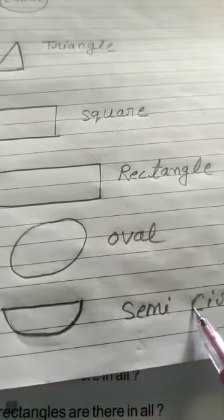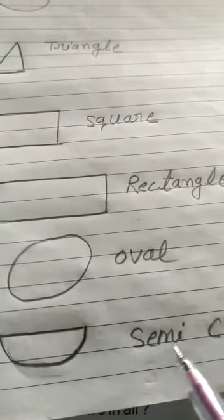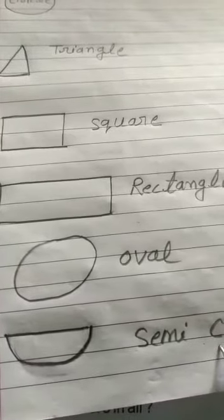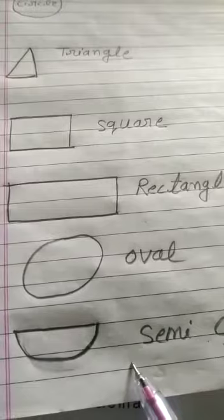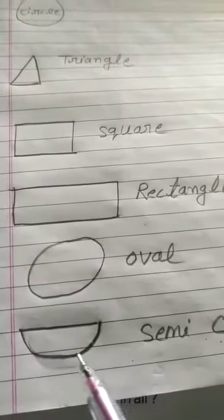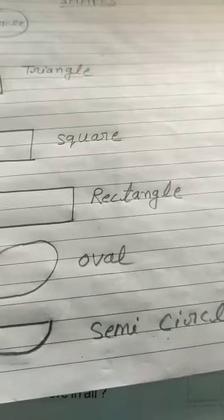Students, what is semicircle? When you cut circle in half, semicircle. Half circle is semicircle. So this is semicircle. Thank you.